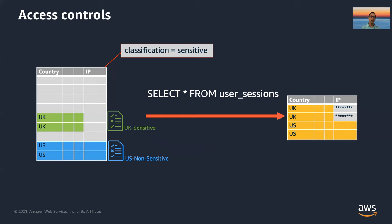Access to data must be managed and enforced in a consistent way so that regardless of how users and applications want to access it, the same permissions are applied. You don't want to have different permissions applied based on different tools or have to settle on a common denominator. If data is classified as sensitive, a user who doesn't have permission should have columns removed or fields masked directly from the results. But for a user with proper permission, that data should be available. Fine-grained permissions and attribute-based access controls are how organizations can manage and control access to data at scale.